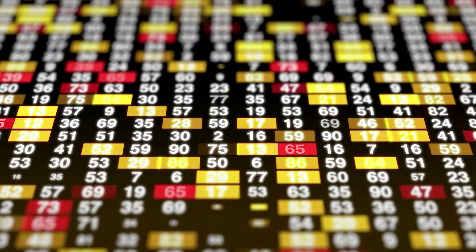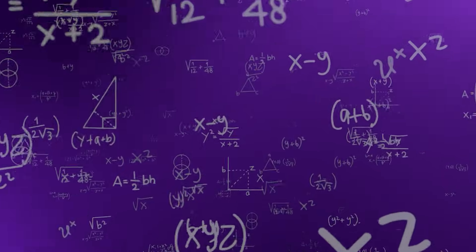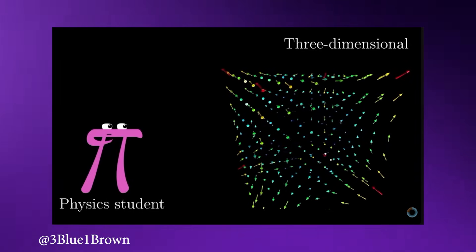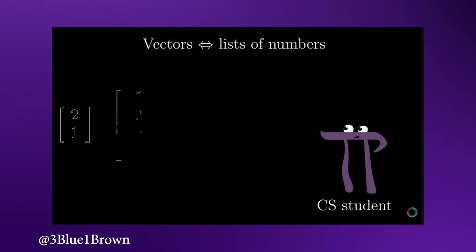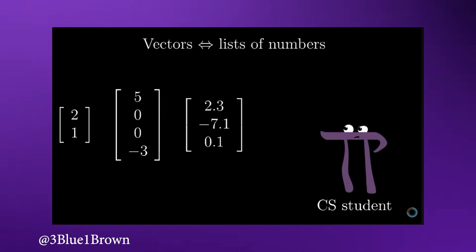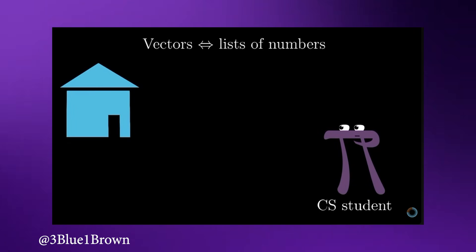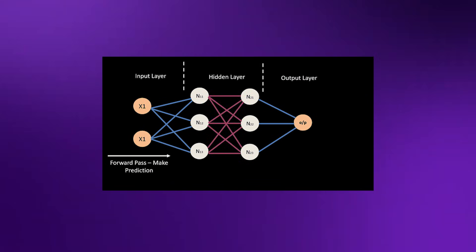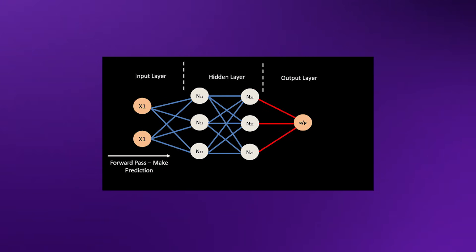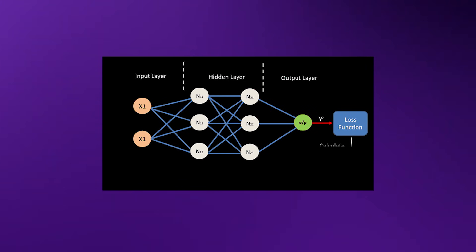To keep it fun and light, I highly recommend watching 3Blue1Brown on YouTube — it turns these numbers into moving shapes and colors that actually make sense. Next we have calculus. You don't have to be a genius here; you just have to understand the chain rule. This is how a machine learning model finds its own mistakes and fixes them.